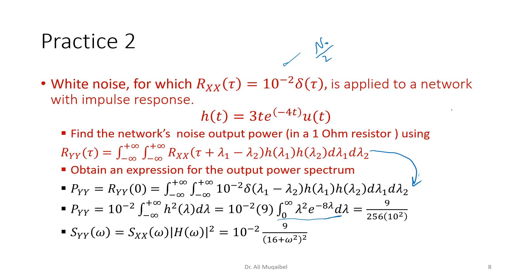Equivalently, using the frequency domain approach, we find the Fourier transform of the impulse response to get H(ω), and the power spectral density of white noise is simply N₀/2. Multiplying these gives the output PSD, and integrating yields the same output power.